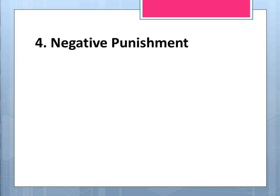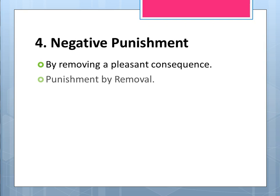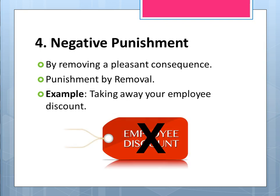Lastly, we have negative punishment. Recall that punishment is to decrease behavior, and negative means to take something away. In the case of negative punishment, we are taking away or removing a pleasant consequence — something valued or desirable. Your textbook refers to this as punishment by removal. Employee discounts are often pleasant consequences or perks of any job. So with negative punishment, your boss can decide to temporarily suspend or completely take away your employee discount to decrease your behavior of arriving late to work.